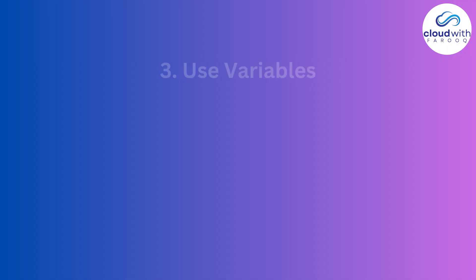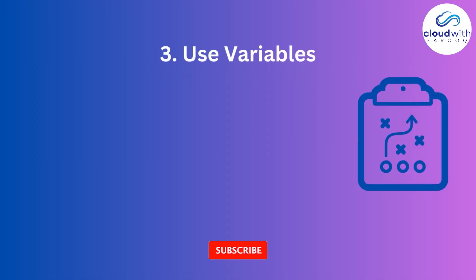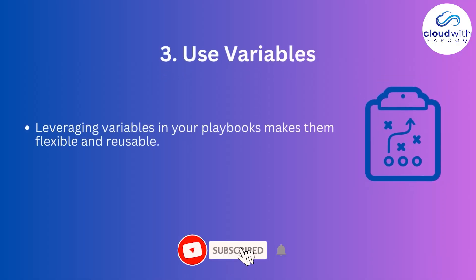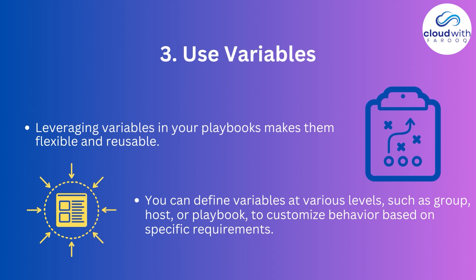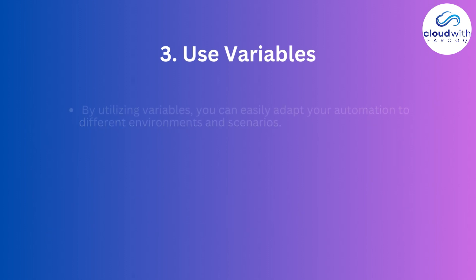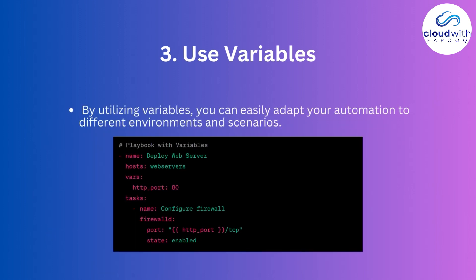Number three: use variables. Leveraging variables in your playbooks makes them flexible and reusable. You can define variables at various levels such as group, host, or playbook to customize behavior based on specific requirements. By utilizing variables, you can easily adapt your automation to different environments and scenarios.